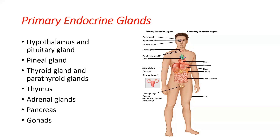The thyroid and parathyroids have hormone secretion as their main role. We've also got the thymus gland, which is important in the immune system as well but mainly involved in the endocrine system. The adrenal glands, located above the kidneys, were discussed in relation to the autonomic nervous system, but they are primarily an endocrine gland. And then there's the pancreas.